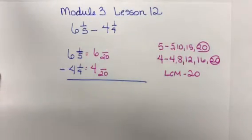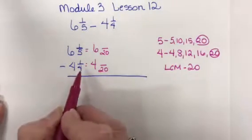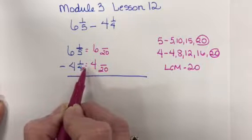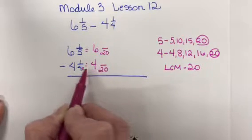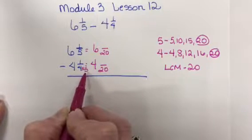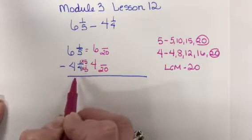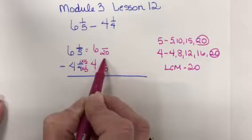Now I need to solve for my new numerator. So I'm going to ask myself, 4 times what number equals 20? It's 5. If I multiply my denominator by 5, I have to multiply my numerator by 5. 1 times 5 is 5.